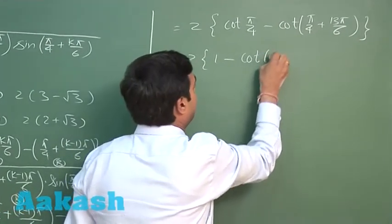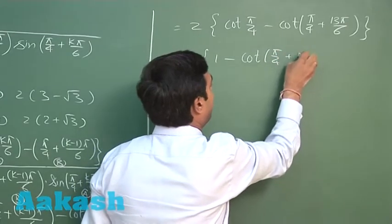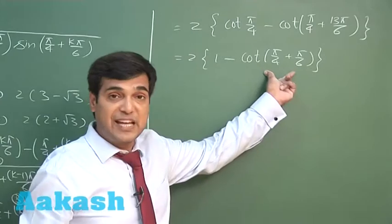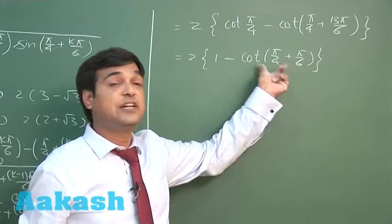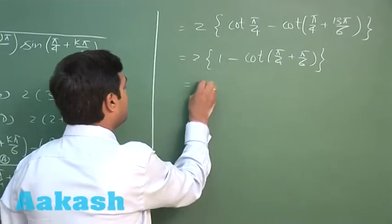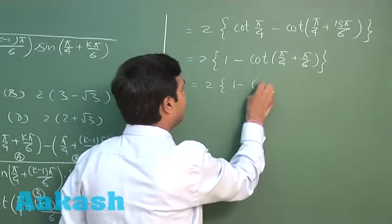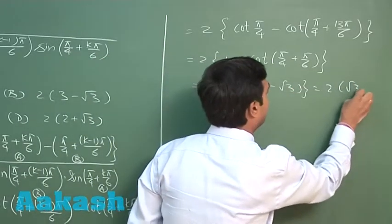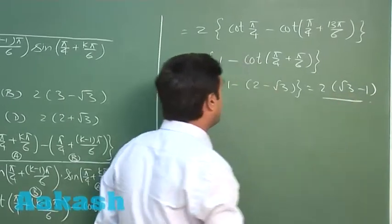That is cot 75 degrees, that is tan 15. Tan 15, that is 2 minus root 3. So it is twice of 1 minus (2 minus root 3), or twice of (root 3 minus 1).